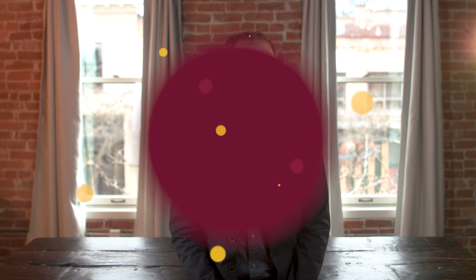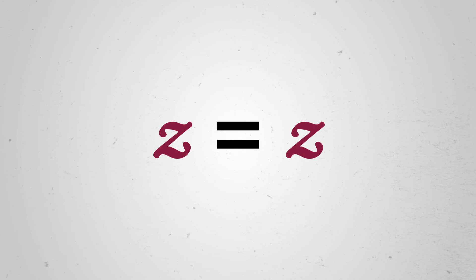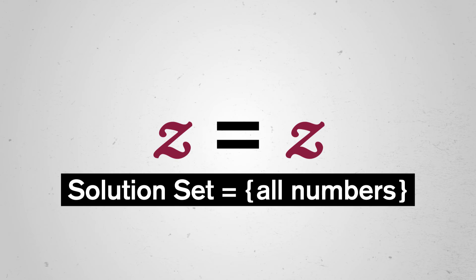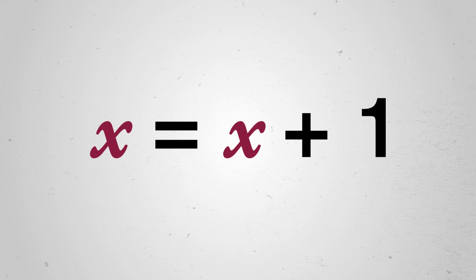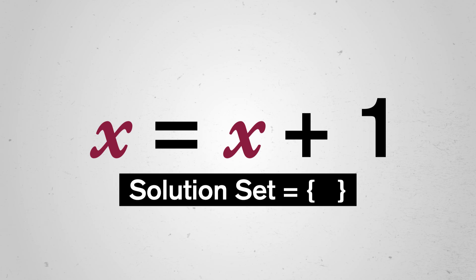If we want to be sneaky, there are even equations with an infinite number of solutions. Think for a moment about which values of z make the equation z equals z true. Any value of z you like. So the solution set is the set of all numbers. And on the opposite end of the spectrum, what values of x make this statement x equals x plus 1 true? None. So the solution set here is empty. But these situations are rare.